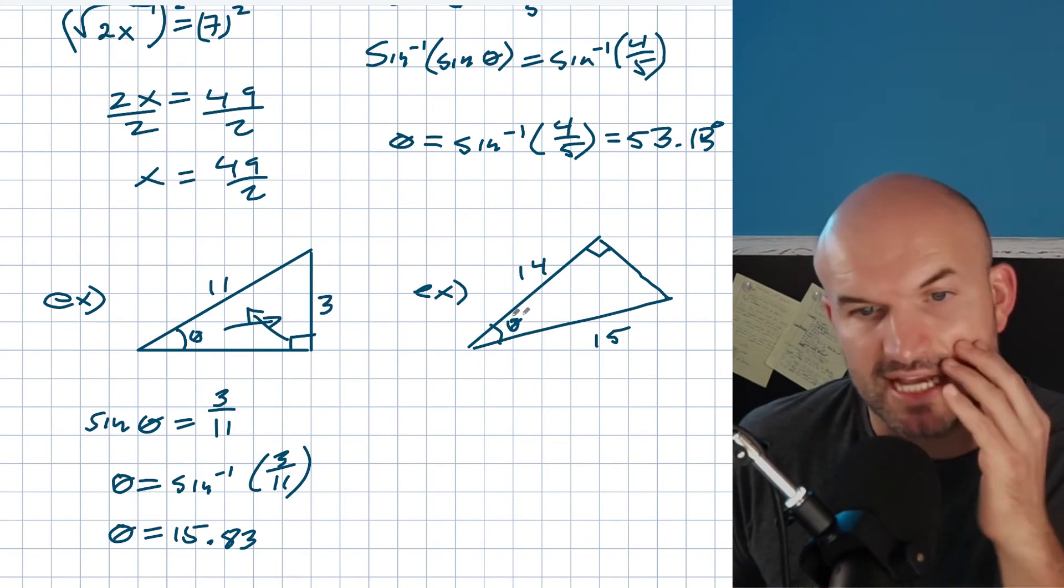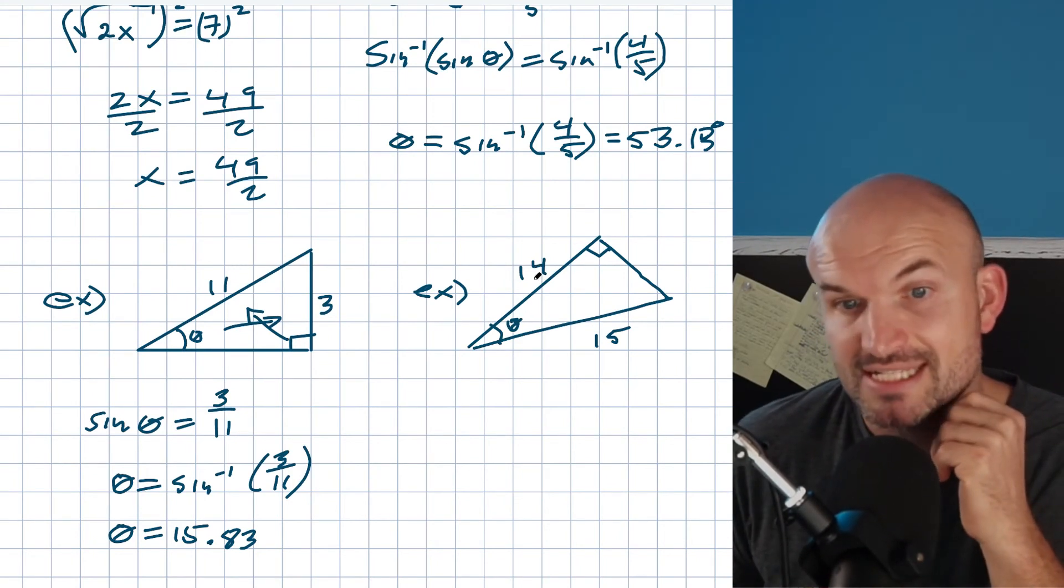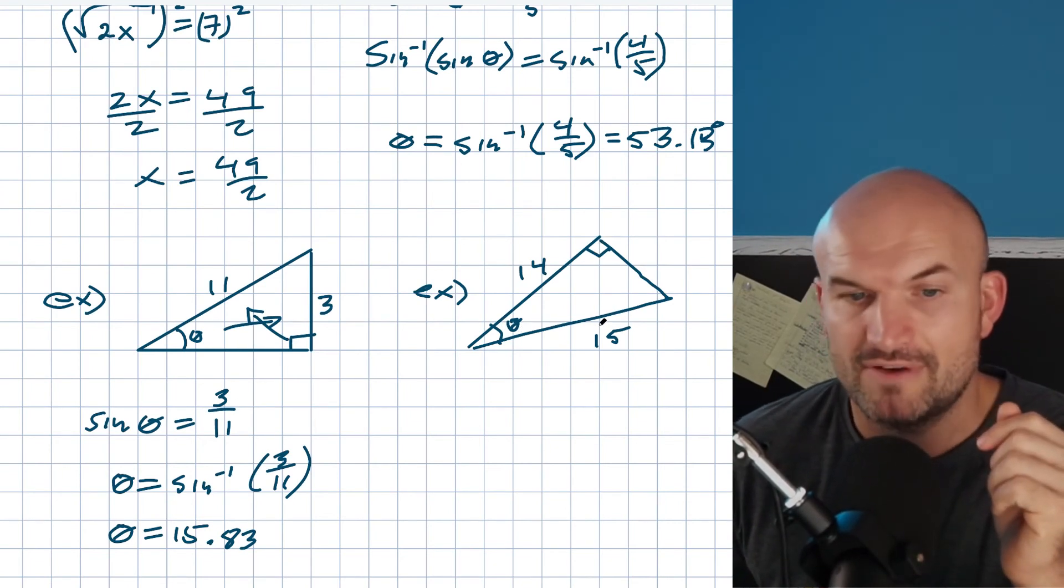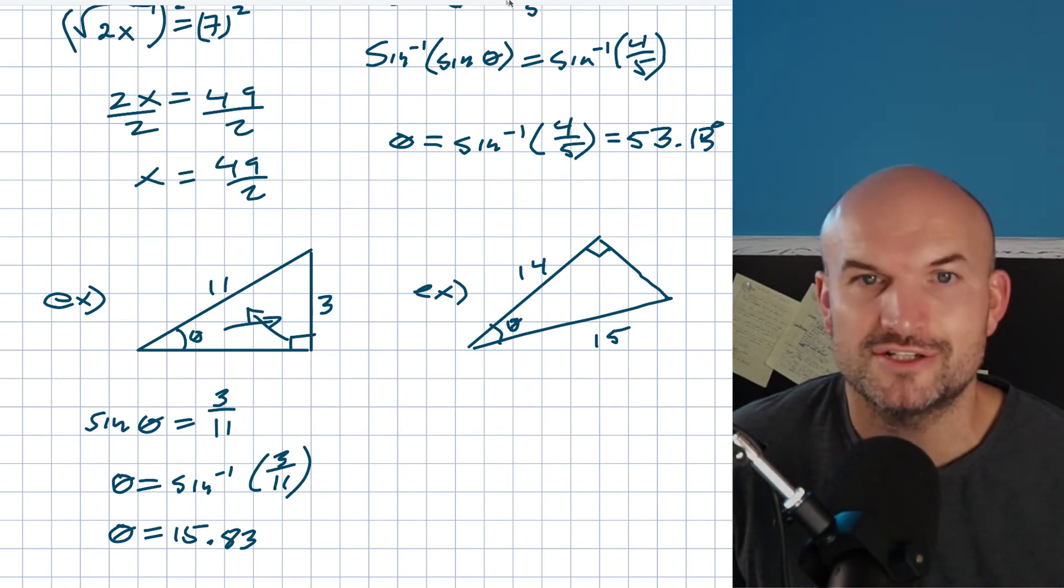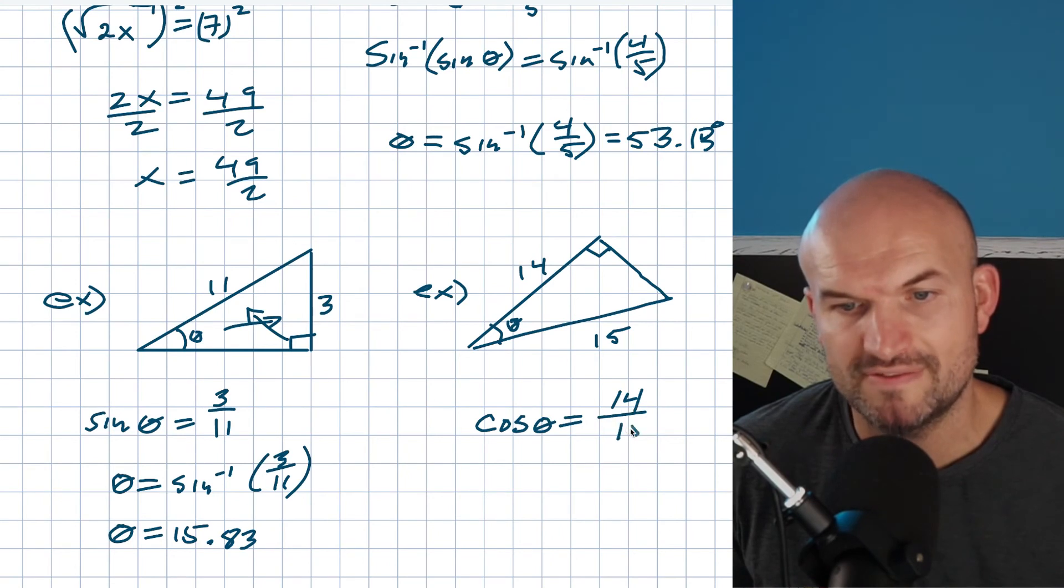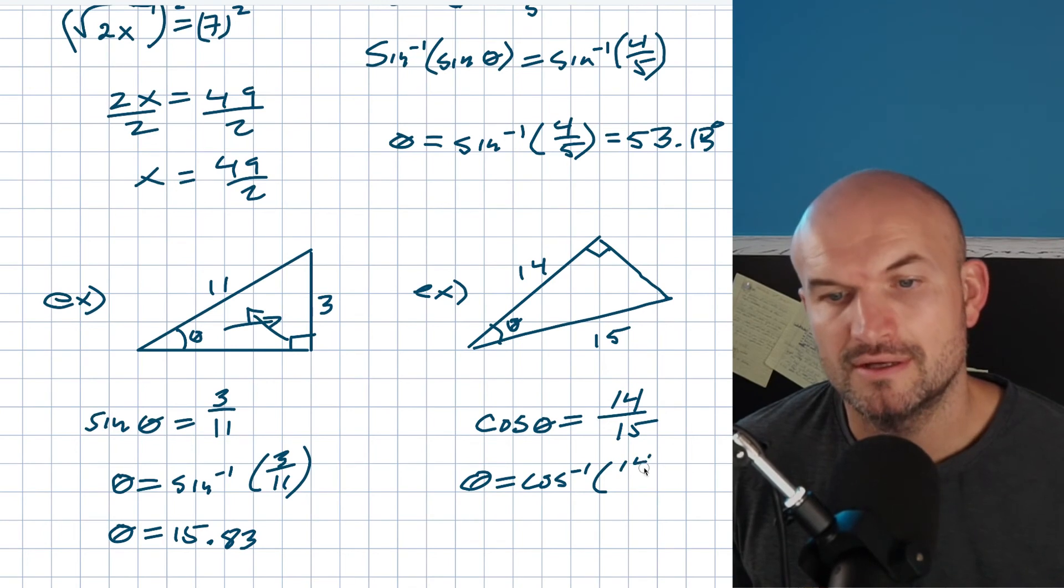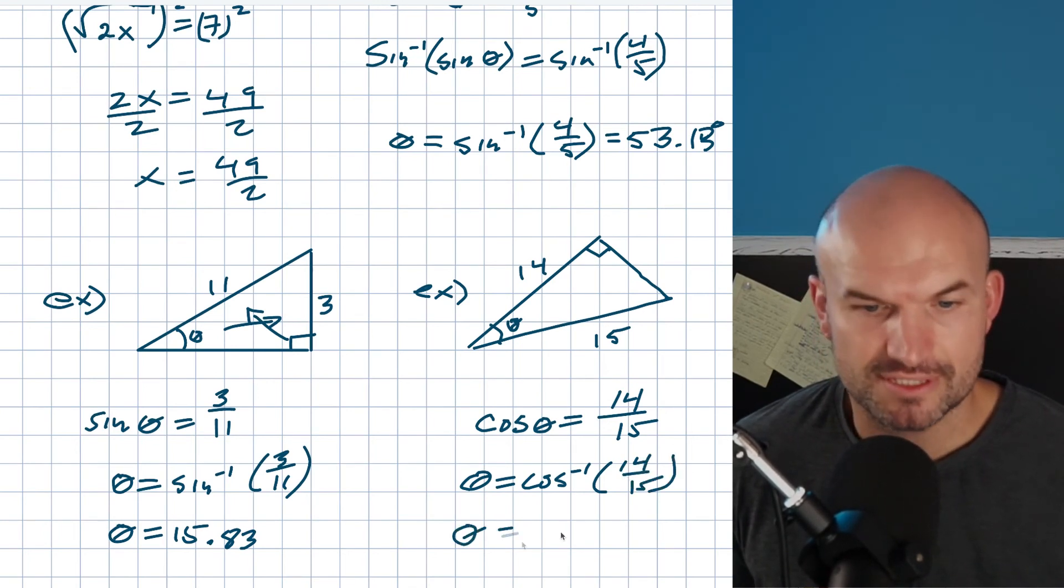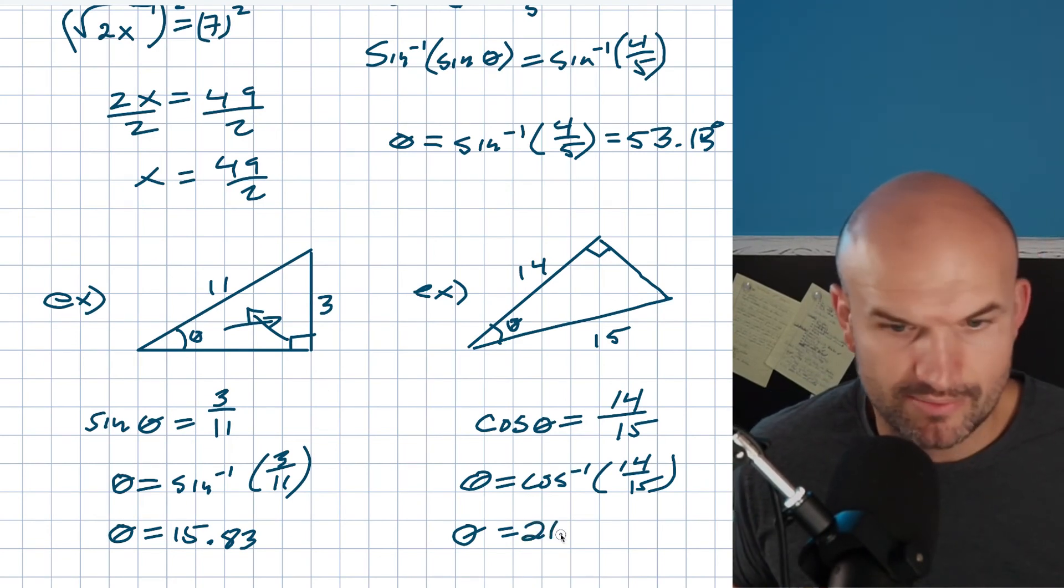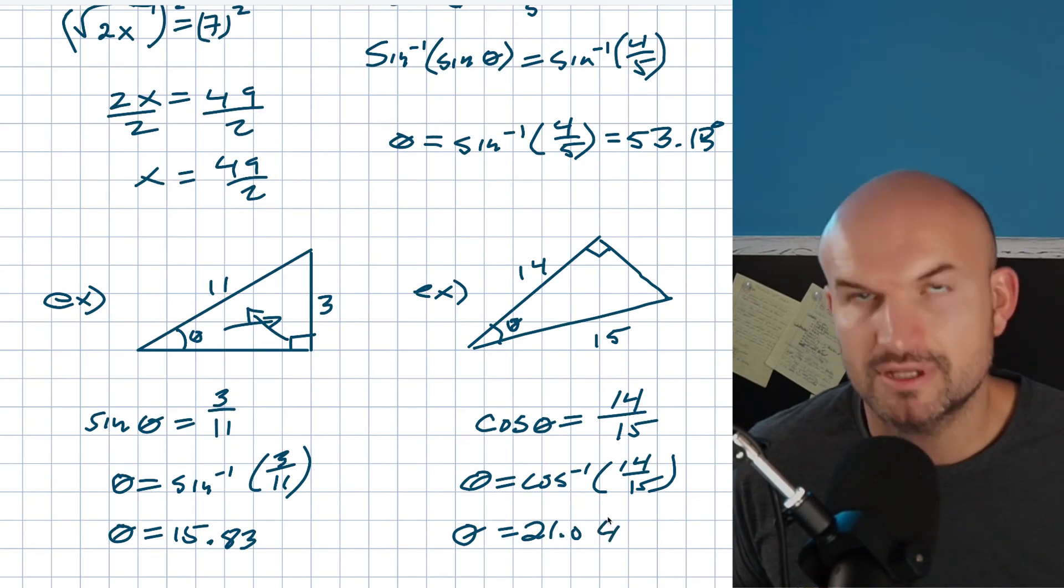You can see that I have theta and now I have the adjacent side, because that side length is between my angle and my 90 degree, and therefore I have a hypotenuse. What trigonometric function deals with the adjacent side and the hypotenuse? That's going to be cosine. So I can say the cosine of theta equals 14 over 15. So now I can say theta equals cosine inverse of 14 over 15. So now theta equals, let's apply this. I'll do cosine inverse of 14 divided by 15, and when I do that I get 21.04.